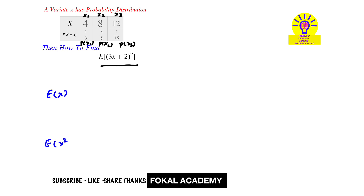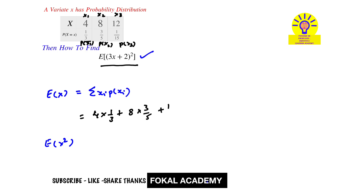Before solving the main expression, first find E[x] and E[x²]. E[x], the mean, is equivalent to the summation of xi times P(xi). That equals 4 times (1/3) plus 8 times (3/5) plus 2 times (1/15), which simplifies to 104/15.